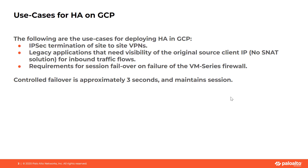Here are the use cases in which you can deploy the VM series firewall in active-passive high availability mode: terminate IPsec VPN on the VM series firewall and provide visibility of the actual client's source IP address to the back-end applications. And in the case where we want session synchronization to happen to the passive instance on HFI level, the active session should not get impacted.